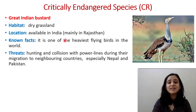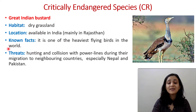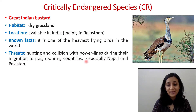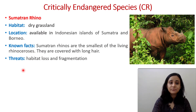The Great Indian Bustard is also under Critically Endangered. Its habitat is dry grassland, located mainly in Rajasthan, India. It is one of the heaviest flying birds in the world. Threats include hunting and collision with power lines during migration to neighboring countries, especially Nepal and Pakistan.